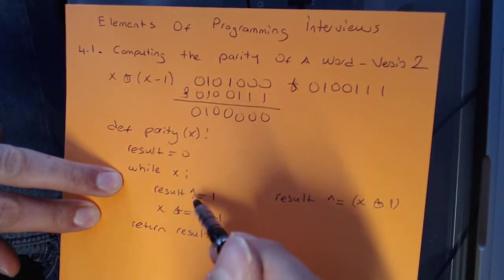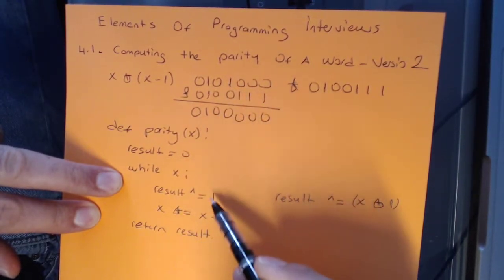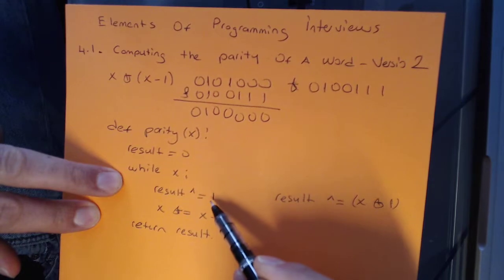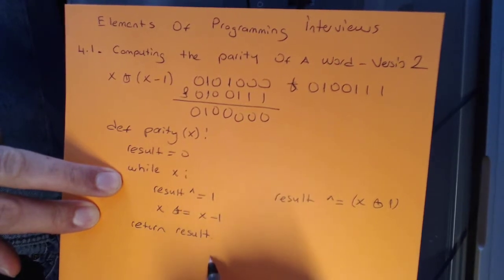And then XORing it with 1. So in this particular example, you have two set bits, so you're going to actually apply this twice, XOR with 1 and XOR with 1 again. Then result will be 0 and it's going to return 0 parity.